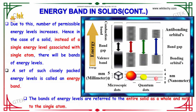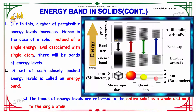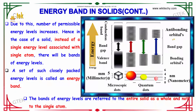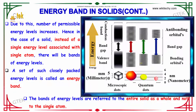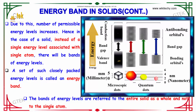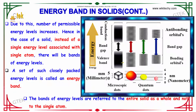Due to this, the number of permissible energy levels will start increasing. Hence, in the case of a solid, instead of a single energy level associated with an atom, there will be bands of energy levels. A set of such closely packed energy levels is referred to as an energy band. The bands of energy levels are referred to as the energy of a solid as a whole, and not for the single atom.